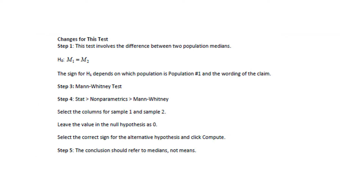The changes for this test: the null hypothesis will compare M1 to M2 — it compares two population medians. The sign for H1 depends on the population and the wording of the claim. There is no change for step 2. We'll write Mann-Whitney test. In step 4 in StatCrunch, press Stat, Non-Parametrics, Mann-Whitney. Pick the columns for sample 1 and sample 2, leave the null hypothesis value as 0, select the correct sign for H1, and click Compute. The conclusion in step 5 should refer to medians, not means.